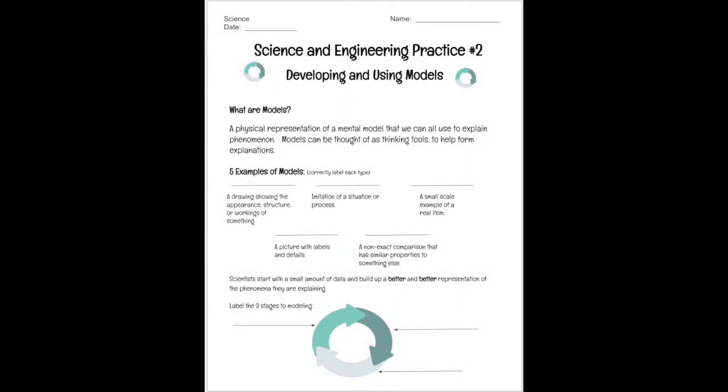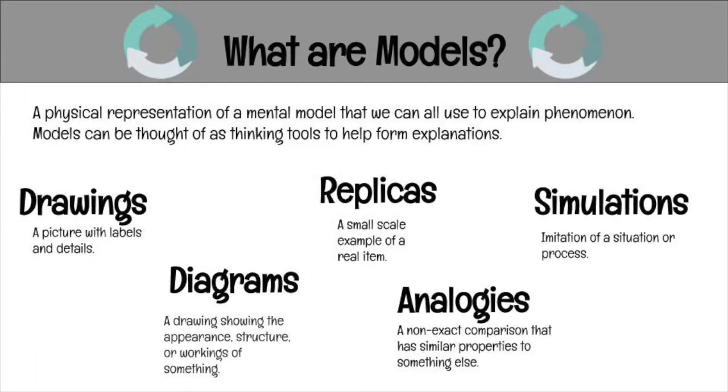Go ahead and open up this note sheet on Google Classroom. There are five different types of models. Models can be drawings, a picture with labels and details. Models can be replicas, a small-scale example of a real item. They can be simulations, which are imitations of a situation or process.